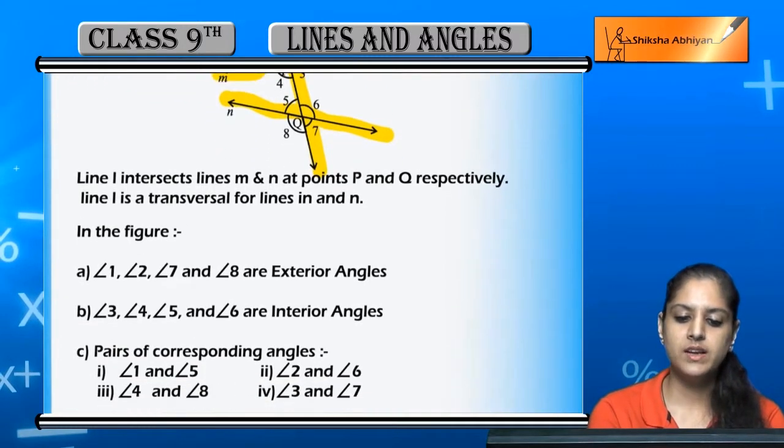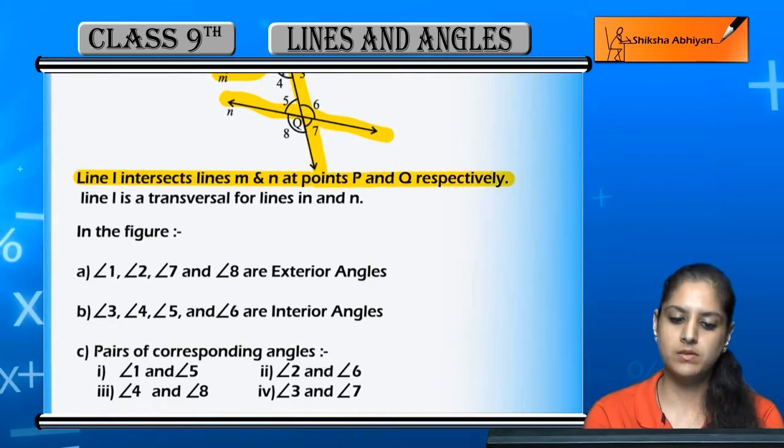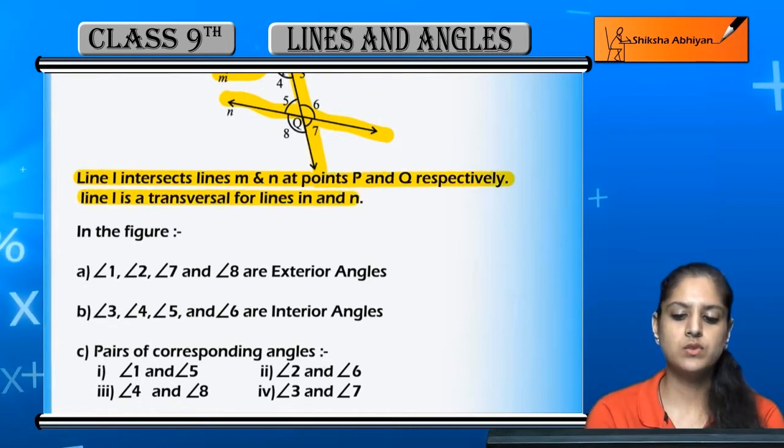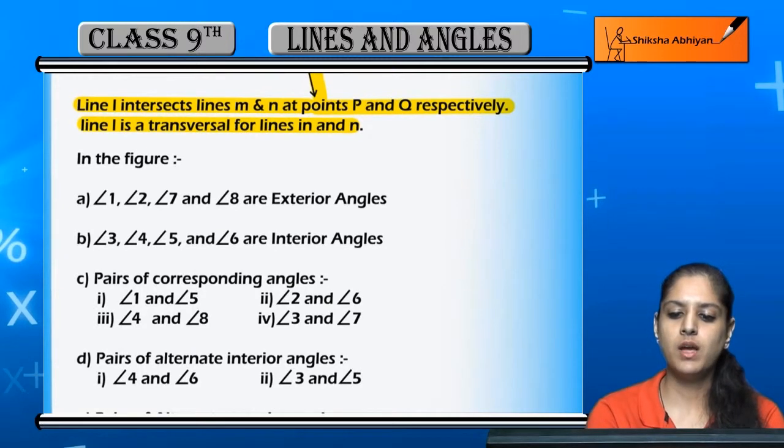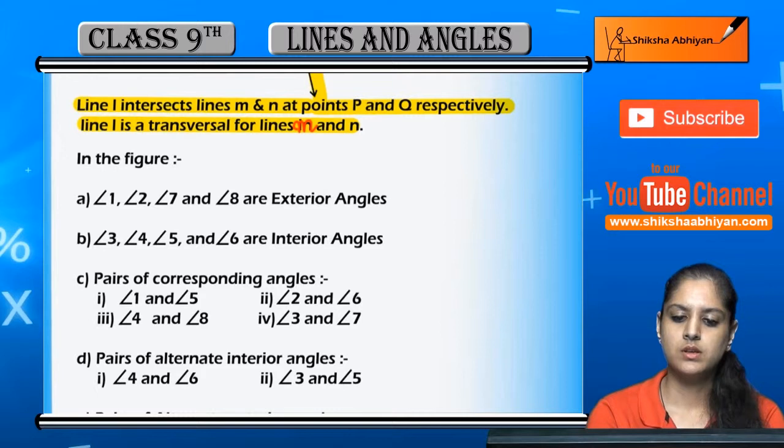So line L intersects M and N at points P and Q respectively, so line L is a transversal for lines M and N. This is N.